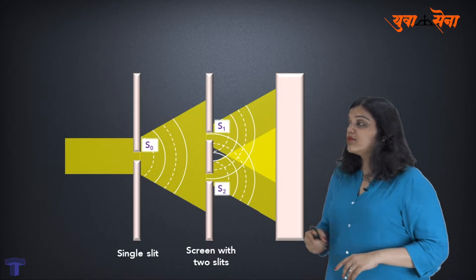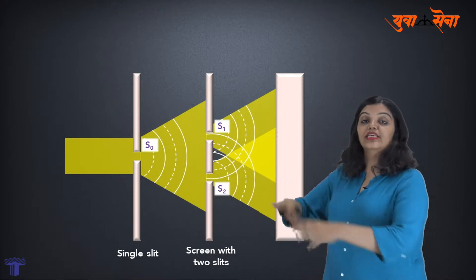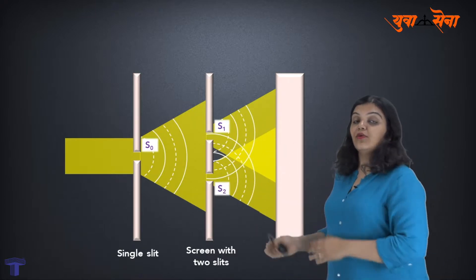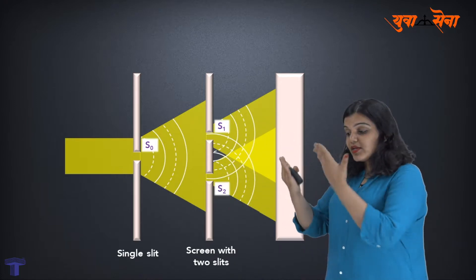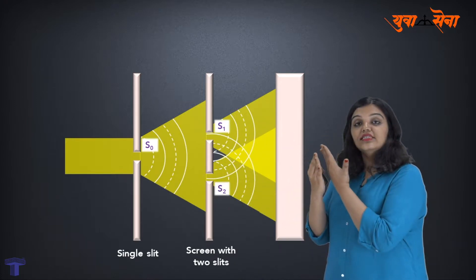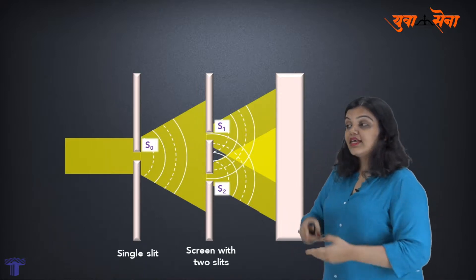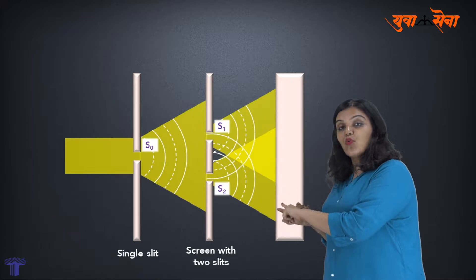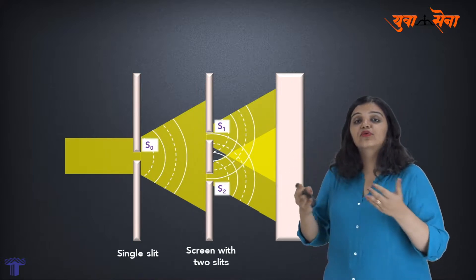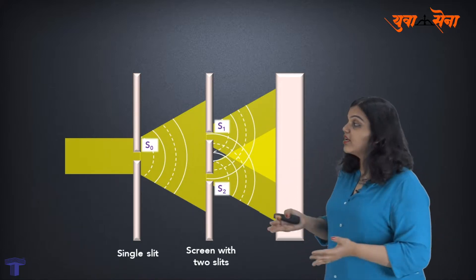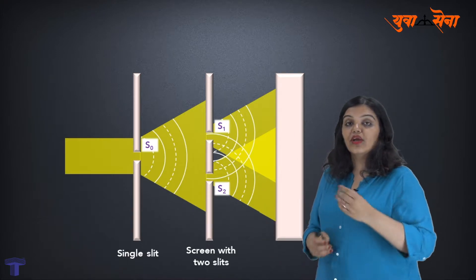It basically means that you will run this experiment with 720 nm and get its interference pattern, then run it with 480 nm and get its interference pattern. When you superimpose these two interference patterns, they are asking when will the bright fringe due to one coincide with the bright fringe due to the other. Equivalently, you can give both wavelengths together from the beginning.